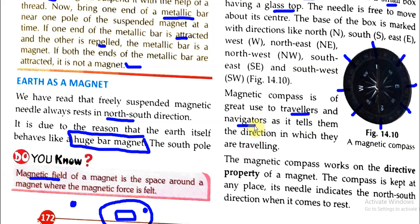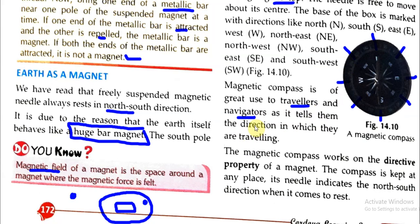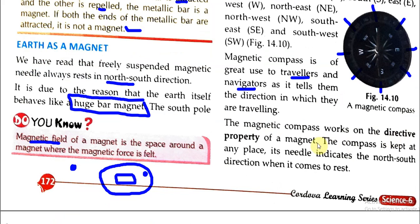The magnetic compass works on the directive property of a magnet. Wherever the compass is kept, its needle indicates the north-south direction when it comes to rest. The needle always points this way.